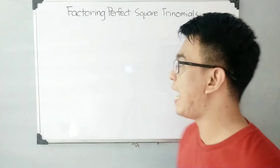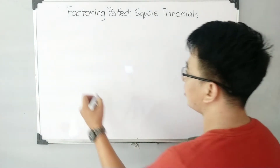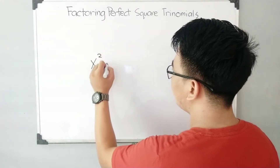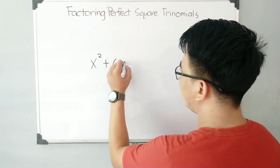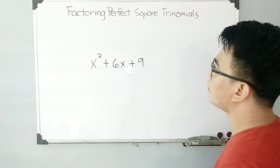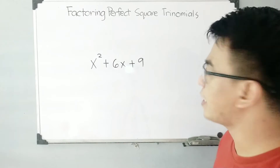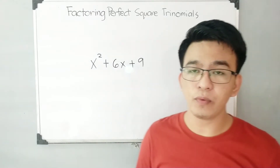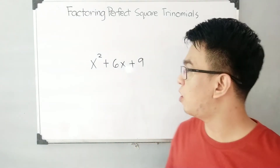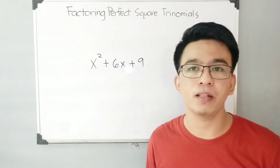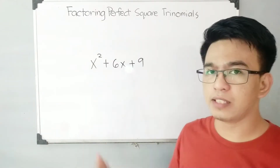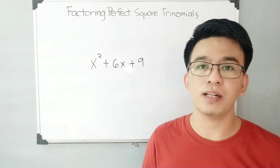So let's say for example, I have an expression: x squared plus 6x plus 9. The question here is how can we factor out or find the factors of this given polynomial? As you can see, this one is an example of a trinomial.